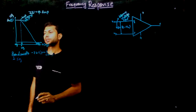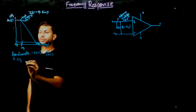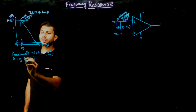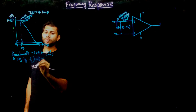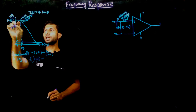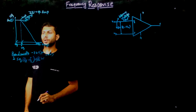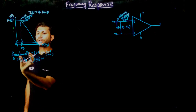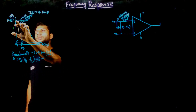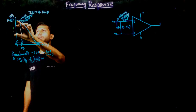Now how can we define bandwidth? The range of frequency — that means higher frequency minus lower frequency — is known as bandwidth. Whenever the mid-range gives you constant amplitude of your circuit, we can say the range of frequency up to which the magnitude of the output of your system remains constant is the bandwidth.